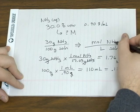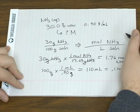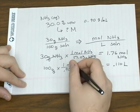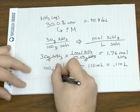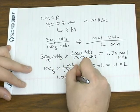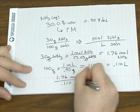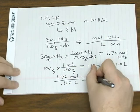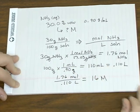So if you look, we have the number of moles of our solute. We've got the solution volume in liters. All you have to do now is divide the two to get your molarity, which turns out to be 16 molar.